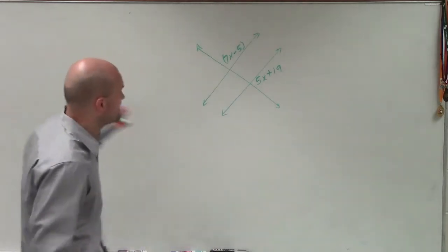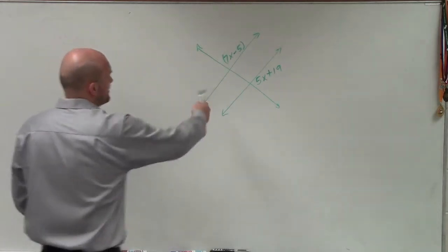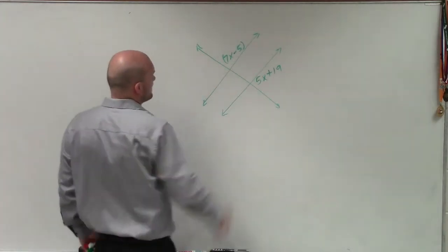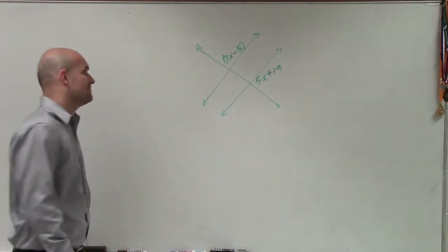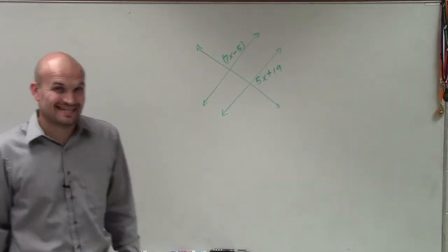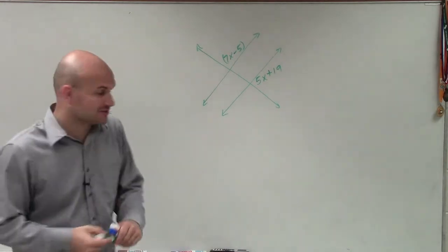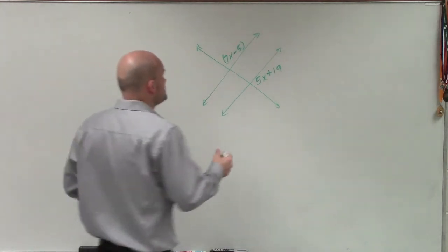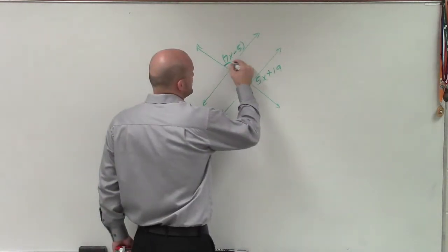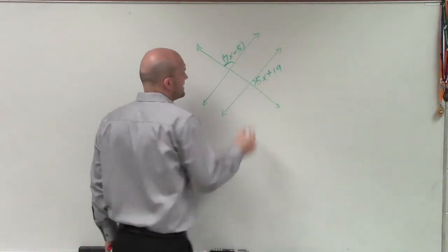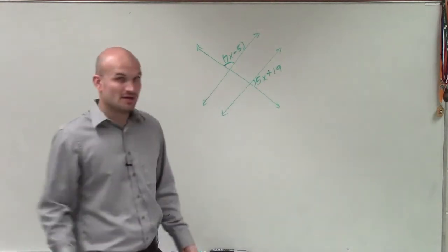Welcome. What I have here is 7x minus 5 and 5x plus 19. Those are two angles on two lines, and what I'm trying to do is prove that they are parallel.